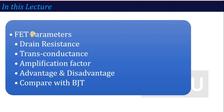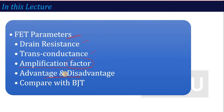In this lecture, we are going to talk about other parameters of FET, like drain resistance, transconductance which we have already talked about, then amplification factor. Like in BJT, the amplification factor is output current divided by input current. We will see the same thing for FET — what is the amplification factor. Then we will cover advantages and disadvantages, and the main important thing is the comparison with BJT — what are the similarities and differences.